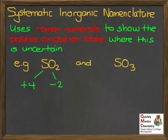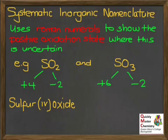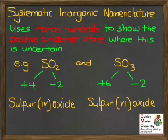Looking at SO2 first: working through the oxidation states, we get sulphur at plus 4 and each oxygen at minus 2. So we give it the name sulphur(IV) oxide — meaning sulphur at its plus 4 oxidation state combined with oxygen. Likewise for SO3, the oxidation states give plus 6 for the sulphur, so it's sulphur(VI) oxide. Note that it's only ever the thing with the positive oxidation state that we give the Roman numerals for — Roman numerals are always for positive oxidation states, so you don't need a sign.